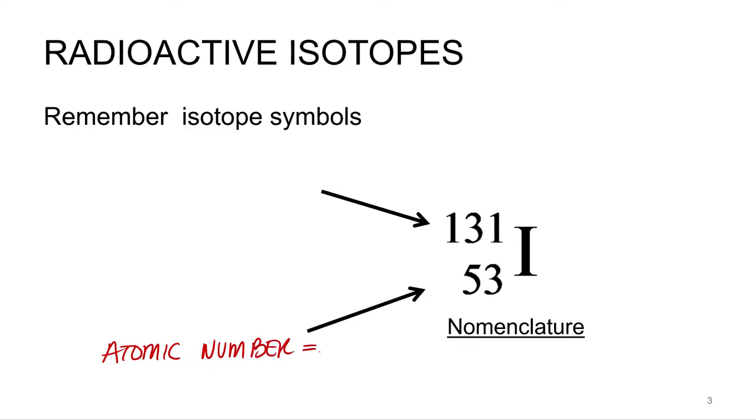And what is that equal to? The number of protons? The atomic number is equal to the number of protons. Remember, that's what makes an element an element. Every iodine atom has 53 protons no matter what.